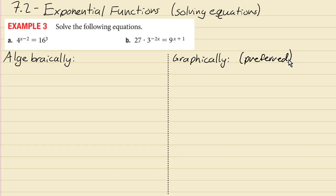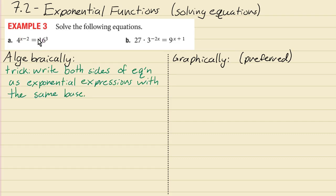So the trick is with something like this when you have 4 to a power and 16 to a power and the variable is in the exponent, you want to write them as exponential expressions with the same base. And right now they have different bases. The base on the left is 4, the base on the right is 16, but you could write 16 as 4 to the power 2.